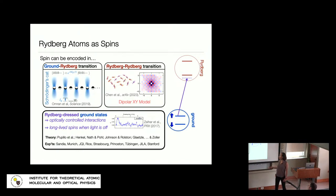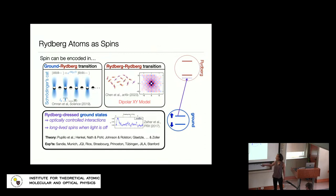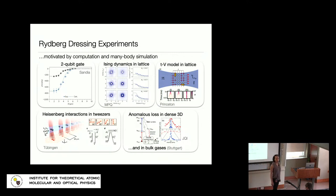The key features of Rydberg dressing are that you can turn on interactions just when the light is on — you have optical control. As soon as you turn the light off, you have stable, long-lived ground states, which is nice for metrological applications. This idea of Rydberg dressing has been considered in a number of theoretical papers, including a seminal one by Guido who is here, and it's been explored in several experiments in the community.